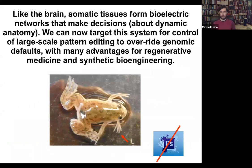Boiling down the whole talk into basically two sentences: like the brain, your body tissues form electrical networks that make decisions. These are decisions about dynamic anatomy. And we now have the ability to target the system to control large-scale editing that can even override all kinds of genomic default states, with lots of advantages and opportunities for regenerative medicine and synthetic bioengineering.